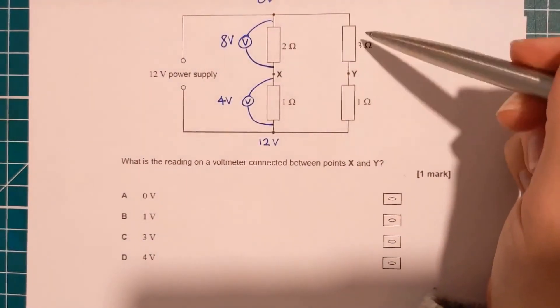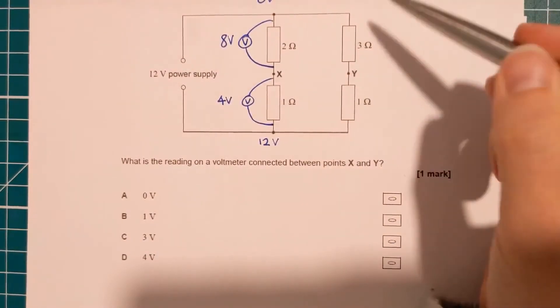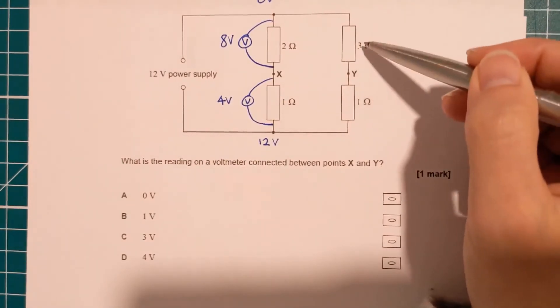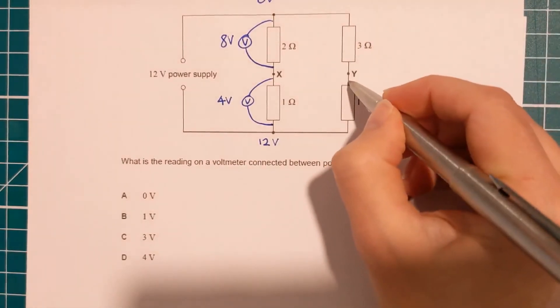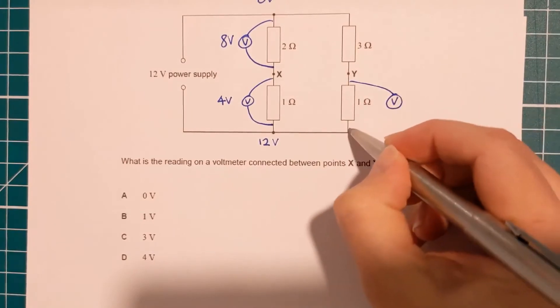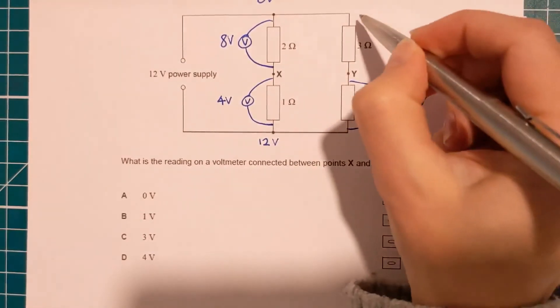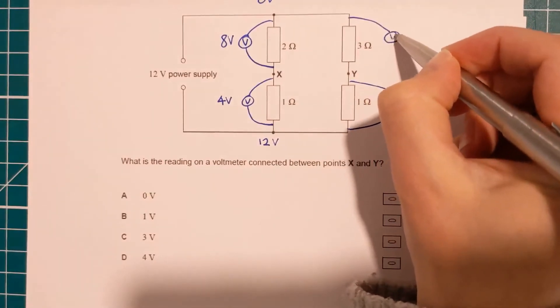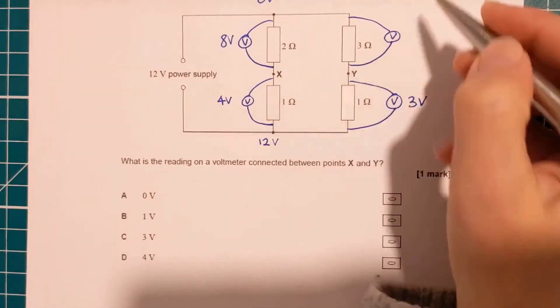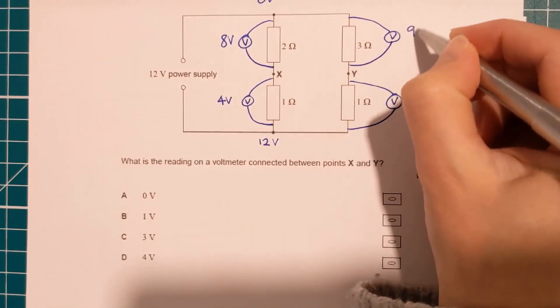Now looking at these two, we've got four ohms this time. So this one's going to get a quarter, and that's going to get three quarters. So if I had a voltmeter there, it's going to read a quarter of the 12, so three volts, and that one's going to read three quarters of the 12. So that's nine volts.